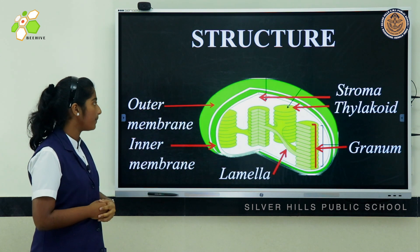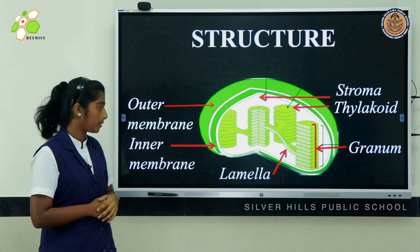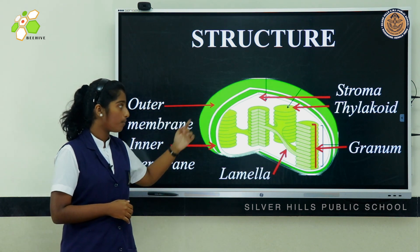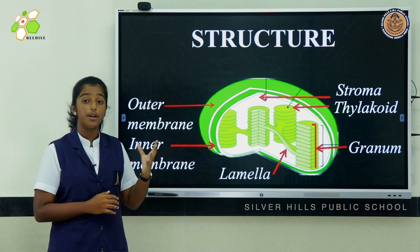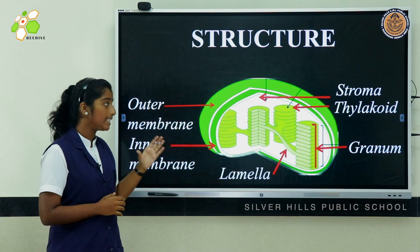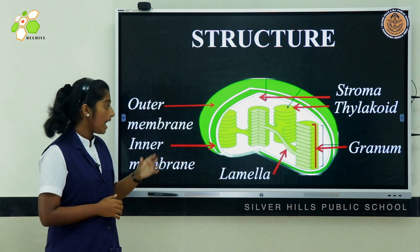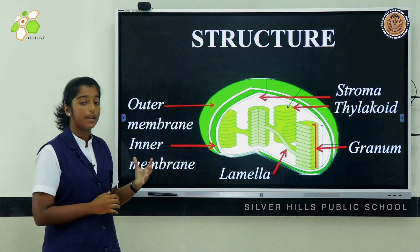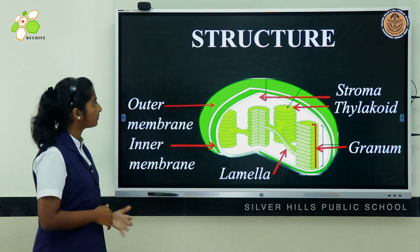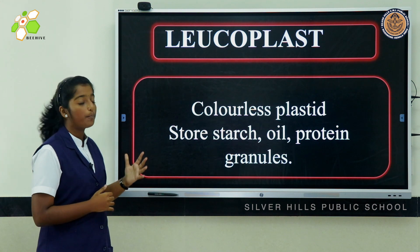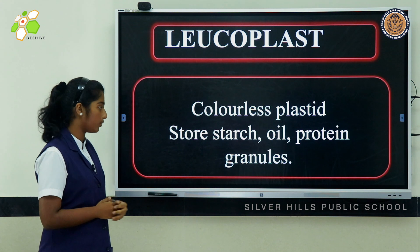Now let's see the structure of chloroplasts. They are covered by an outer membrane and inner membrane — a double-walled membrane — and the stroma. Stroma is the colorless fluid. We also have the thylakoid, which is a membrane-bound compartment. These stacks of thylakoids are known as the granum, and the lamella is the sheet-like membrane that connects these stacks. Leucoplasts are colorless plastids, and they store starch, oil, and protein granules.